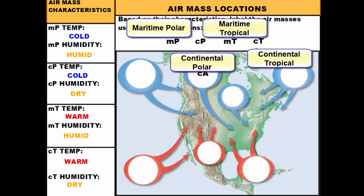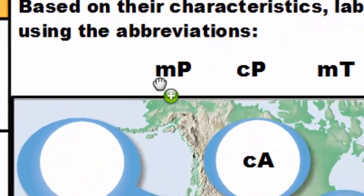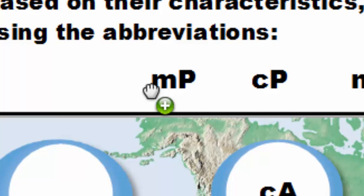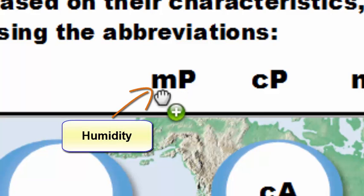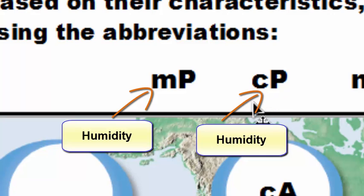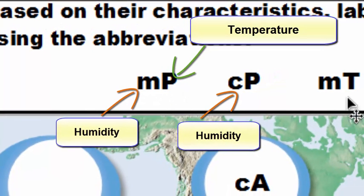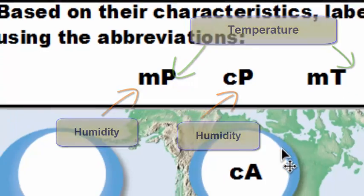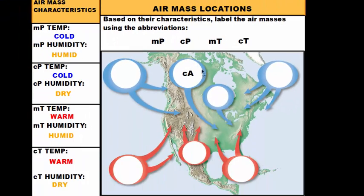Now there are a couple of things you need to know about abbreviations, which you may use when we take our test. You need to make sure you put the humidity first — that's the lowercase letters. Maritime and continental refer to whether it's humid for maritime or dry for continental. Then on the second part of the abbreviation, in capital letters, you put the temperature: either polar for cold or tropical for warm. We also have a fifth air mass that develops way up in the north towards the poles, called continental Arctic air, which is a little different from continental polar air.